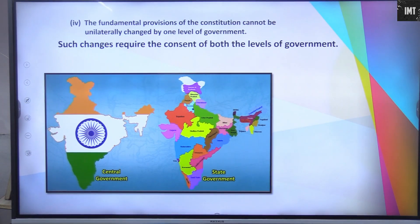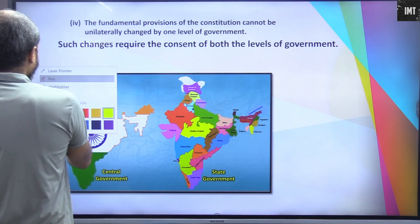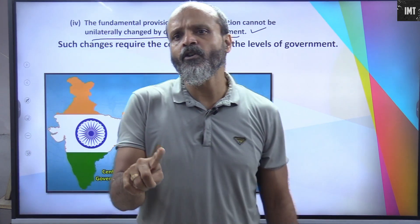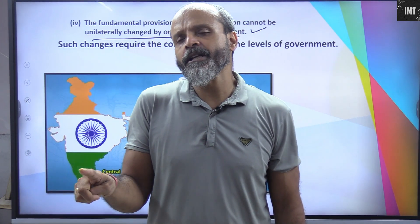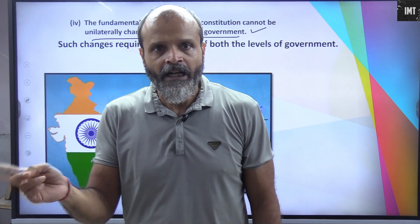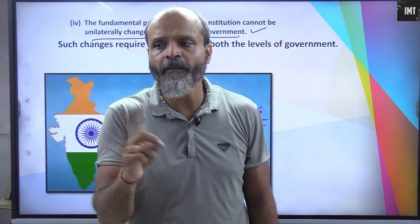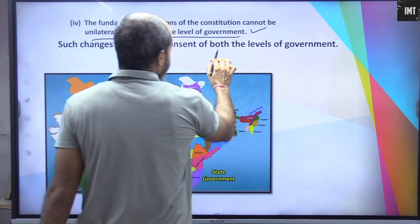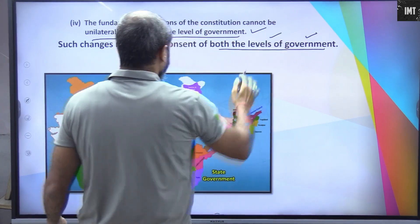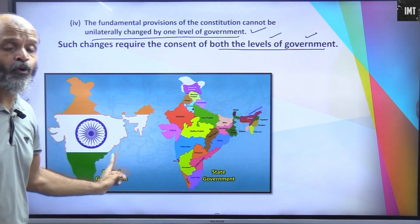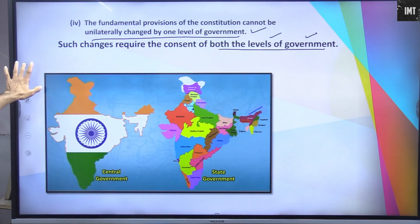The fundamental provisions of the constitution cannot be unilaterally changed by one level of government. Neither the union government nor the state government can change each other's powers or policies unilaterally. Such changes require the consent of both levels of government — both the central level and the state level must agree to it.